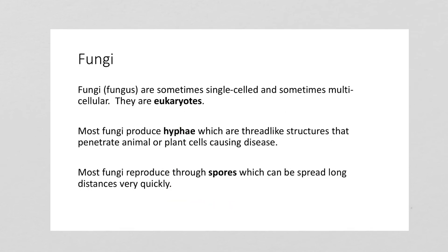Fungi, or a fungus, can be sometimes single-celled and sometimes multi-celled organisms — they are eukaryotes, like us. Most fungi produce a structure called a hyphae, which is a thread-like structure that pierces cells of plants or animals, and that's what causes the disease. Many fungi also reproduce through spores, releasing them into the air where they can spread really quickly and really far.